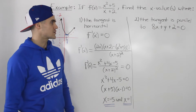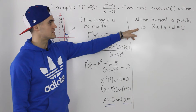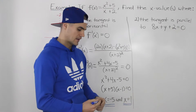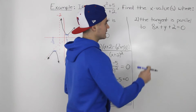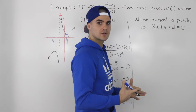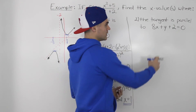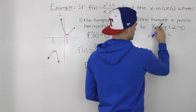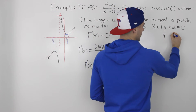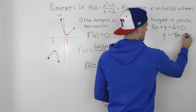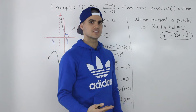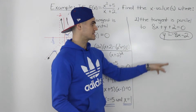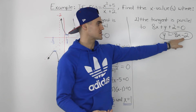The next part of the question is to find the x values where the tangent is parallel to the line 8x plus y plus 2 equals 0. The first thing you want to do whenever you get a line in this form is put it into y equals mx plus b form. Isolating for y, we bring the 8x and the 2 over, giving us y equals negative 8x minus 2. Now it's easier to see the slope and y-intercept.